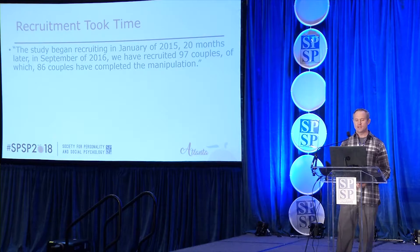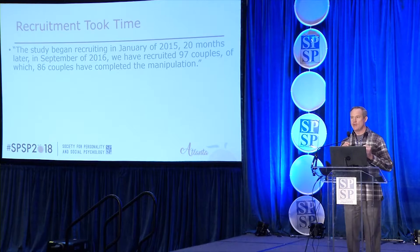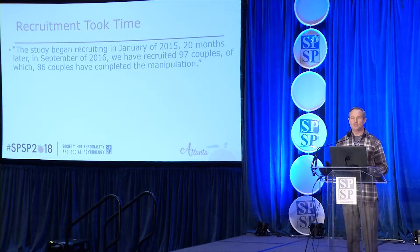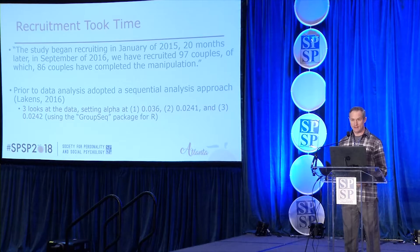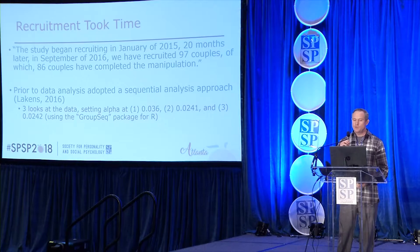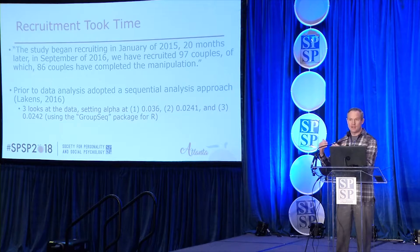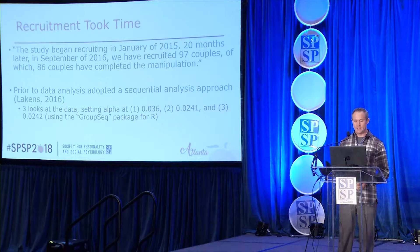Data collection was slow. The study began recruiting in January of 2015. Twenty months later, in September of 2016, we had recruited 97 couples, of which 86 had completed the manipulation. We actually pre-registered a change in approach along the way—without having looked at the data—partly inspired by Daniel Lakens, who came to our department and gave a talk about sequential analysis: planning planned looks at your data and adjusting alpha accordingly. We adopted this in our research. We went all the way to the third planned look, and that's what I'm presenting today.